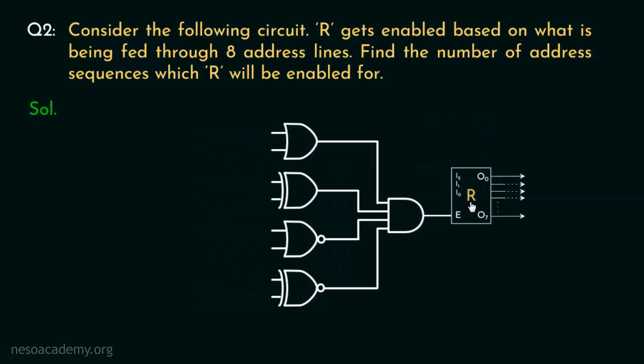If we observe, R's enable input is connected to a multi-input AND gate of fan-in 4, which simply means it can accept 4 inputs. Since it's an AND gate, we know that it will only be activated if all of its inputs are high. Interestingly, in the next level, 4 different gates are there and 2 inputs to each of the gates equates to 8 addresses.